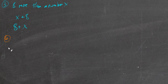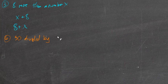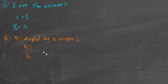Number 6, 50 divided by a number h. So 50 divided by a number h or 50 divided by a number h. However we want to look at it, it's just 50 divided by h somehow.